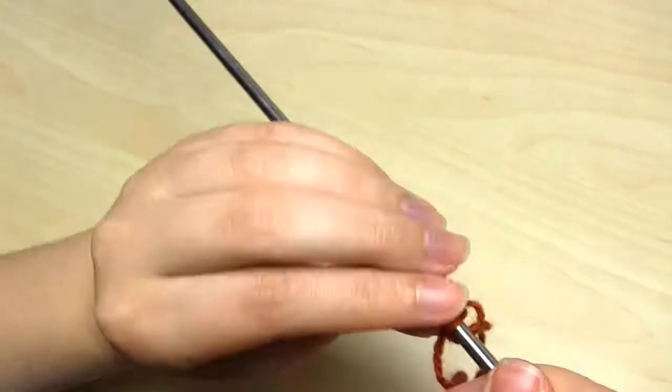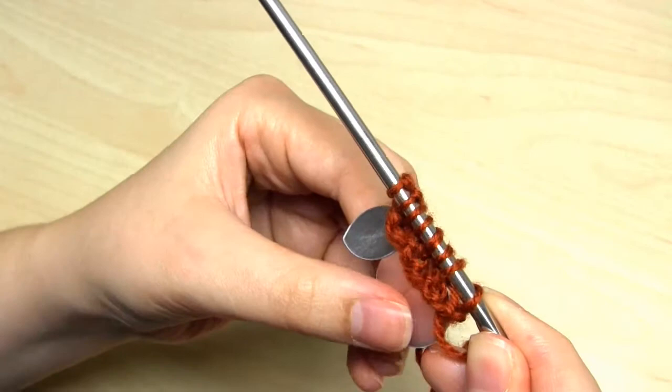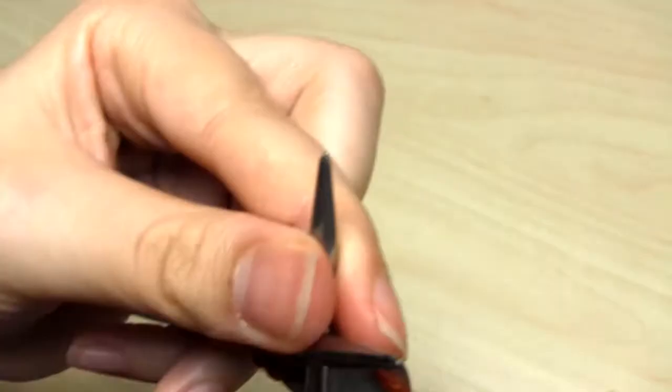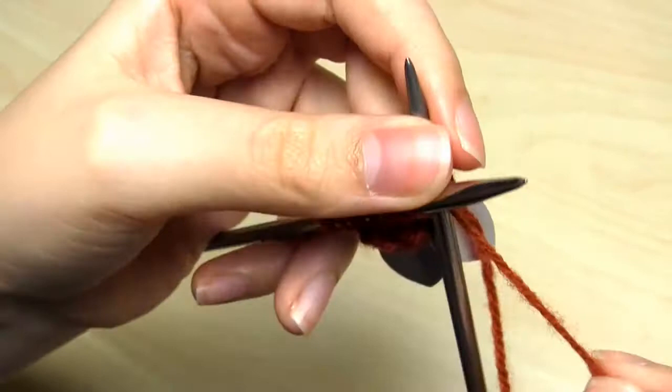And then we're on to the next knit row. This time, I'm going to knit a couple of stitches first, before I add the first scale. Because I want to add two scales this time, rather than three, and I want them to be positioned more in the centre of the row. You'll see the effect of this a little bit later.